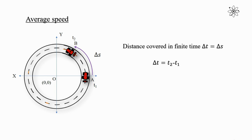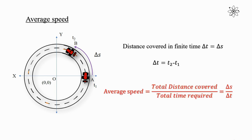The average speed of the car is equal to total distance covered divided by total time required, which is equal to delta s divided by delta t. Note: the symbol delta is used for finite motion.